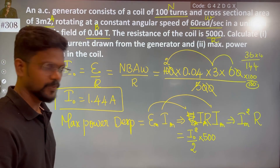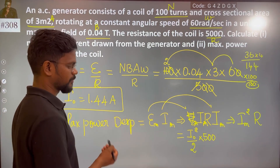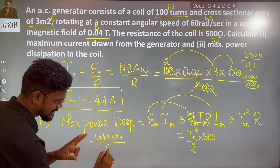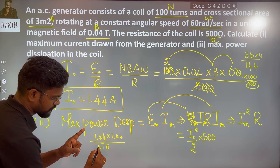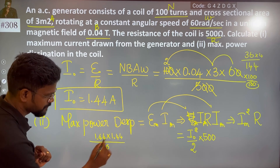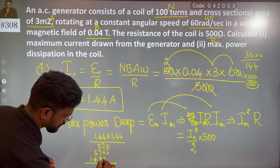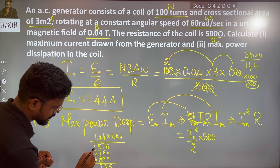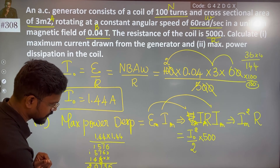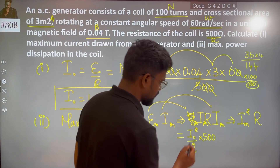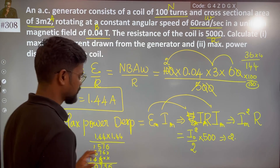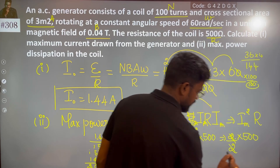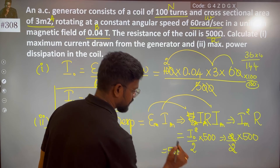Using I₀ = 1.44 amperes: 1.44 squared is approximately 2.07, which we take as 2. So maximum power dissipation equals 2 divided by 2, times 500, which gives maximum power dissipation as 500 watts.